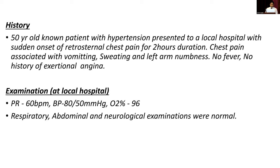Chest pain was associated with vomiting, sweating, and left arm numbness, which is most suggestive of ischemia. There was no fever and no history of exertional angina. On examination at the local hospital: pulse rate 60, blood pressure 80 by 50, saturation normal. Respiratory and abdominal examinations were normal.